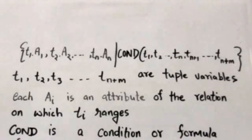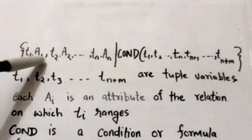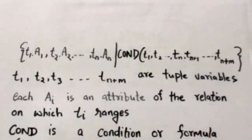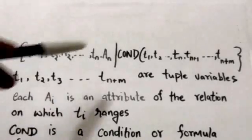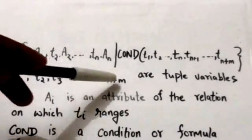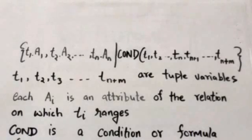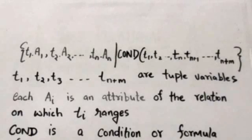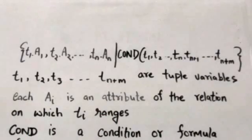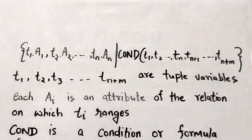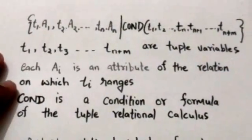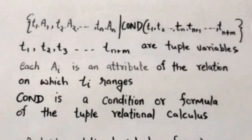The general expression of tuple relational calculus is of this form, where t1, t2, t3 up to tn are tuple variables and each ai is an attribute of the relation on which tuple variable ti ranges. The term 'cond' is a condition or formula of the tuple relational calculus.